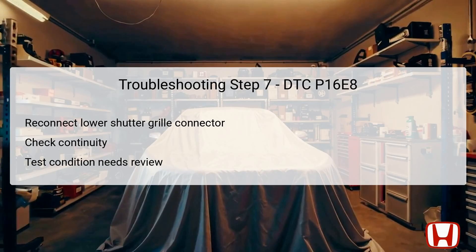In step seven, follow the protocol by reconnecting the lower shutter grille connector and preparing for continuity testing. With the alternator connector still disconnected, check continuity once again between the specified test points. It's essential to maintain the same testing conditions, having the vehicle in off-lock mode. Confirming continuity here indicates healthy wiring through the lower shutter grille circuit. If continuity fails this time, replace the lower shutter grille as needed to rectify communication issues with the PCM.